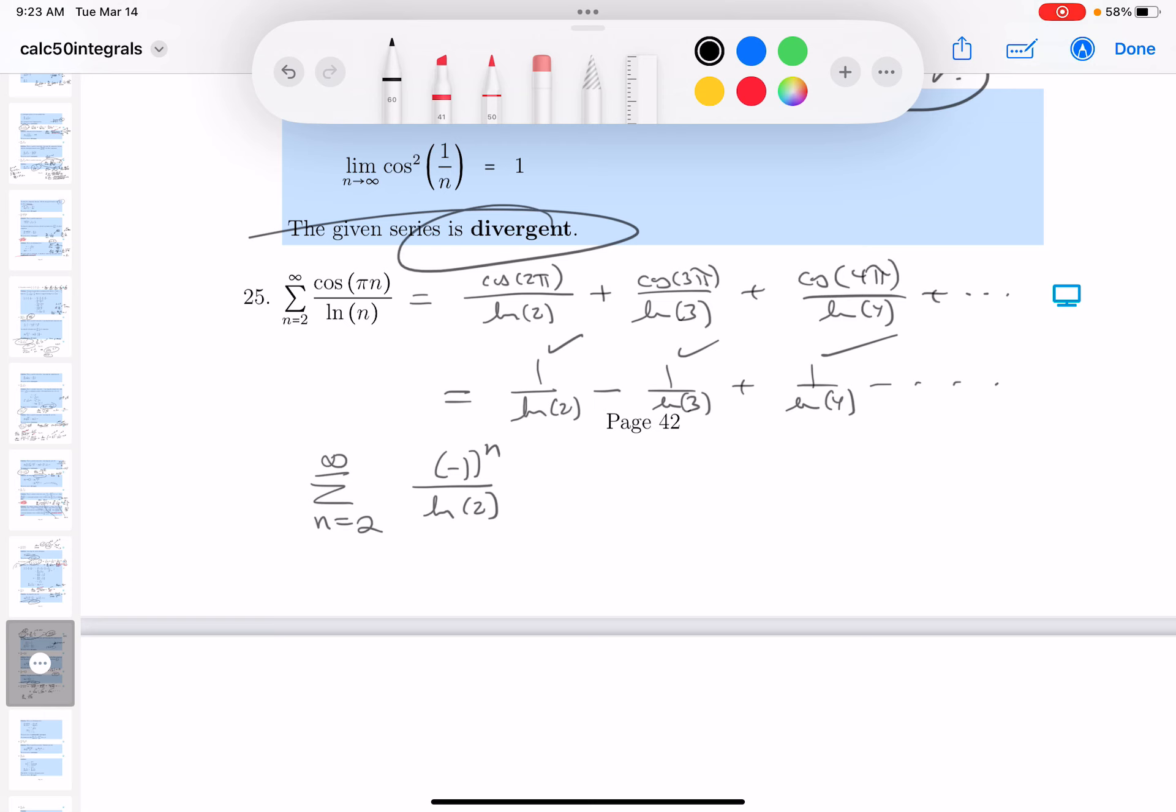So I got this over here. I'm sorry, I made a mistake. And I'm glad I look at my work and correct mistakes as I'm moving along. This is the natural, whoops, I did it again. This is going to be the natural log of n. All right? So what do I have here?